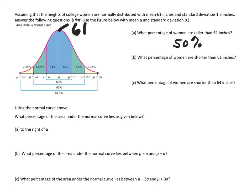Part B: what percentage of women are shorter than the average? The average is 61 inches, so that would be the other 50 percent of the population — all college women. Part C: what percentage of women are shorter than 64 inches? In order to get 64 inches, that's 61 plus two of our deviations.